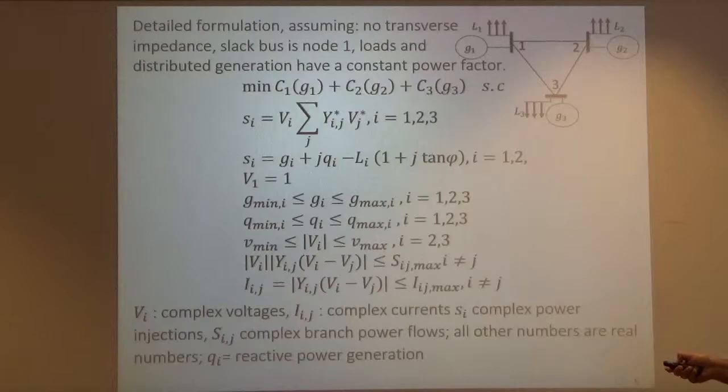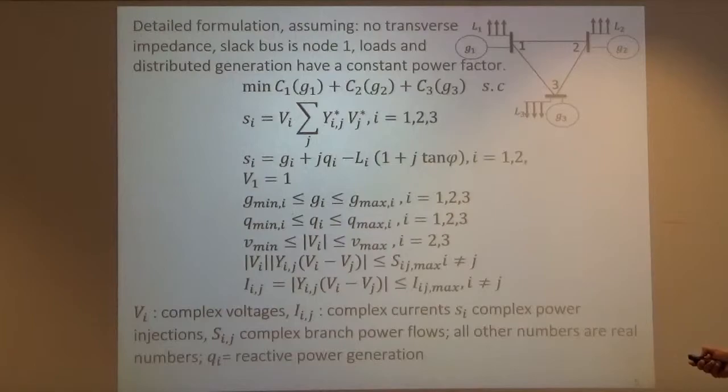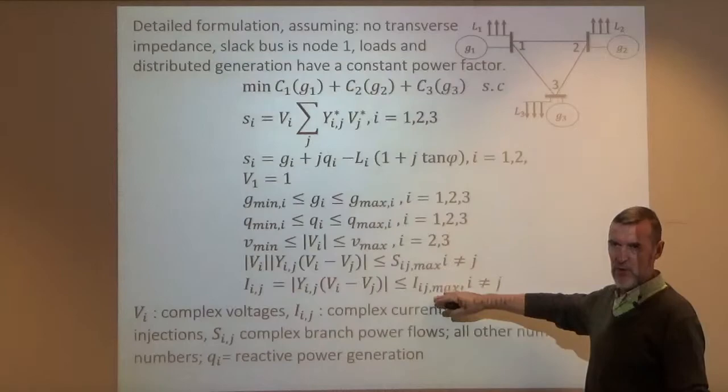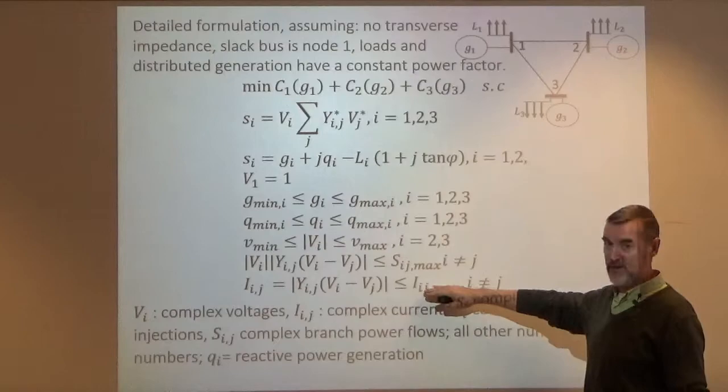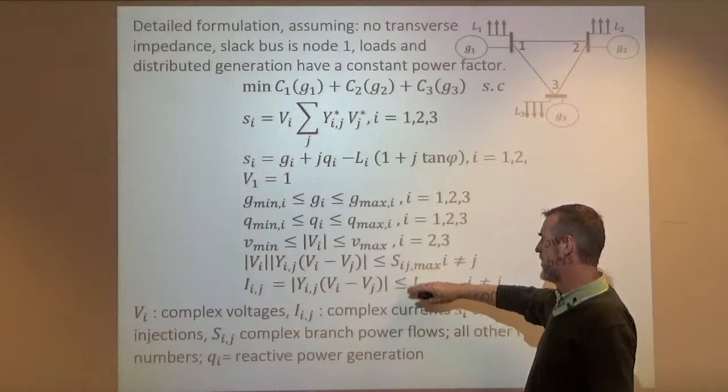There is also a constraint on the line current on each branch. The line current is given by this expression, and I have a constraint on the line current. Very often we have either the power flow constraint or the line current constraint — having both is typically redundant. The power flow constraint is easier to understand; the line current constraint is physically the correct thing. If voltage magnitudes are close to one, the two constraints are very similar anyway.